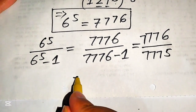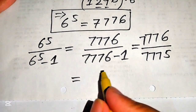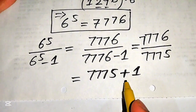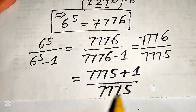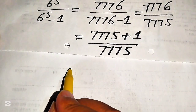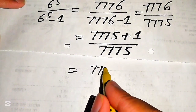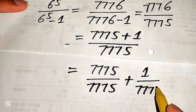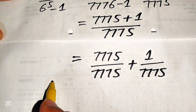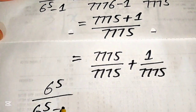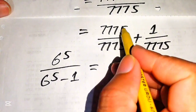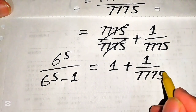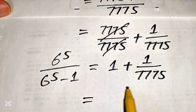We write our final answer in mixed fraction form. We write the numerator term as 7775 plus 1, all over 7775. Then we divide this fraction and write it as 7775 divided by 7775 plus 1 divided by 7775. This term cancels with this term and we get 1 plus 1 divided by 7775.